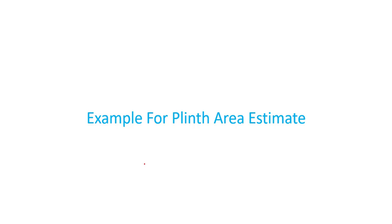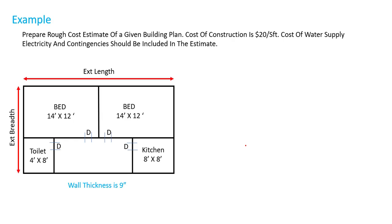Hello, in this tutorial we are going to do an example for plant area estimate. Here is the question: prepare a rough cost estimate of a given building plan. The cost of construction is $20 per square feet. Cost of water supply, electricity, and contingencies should also be included in the estimate.